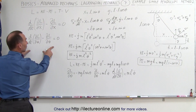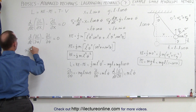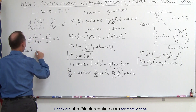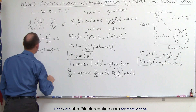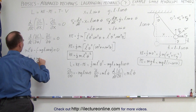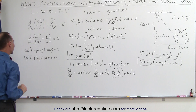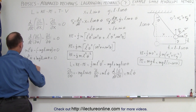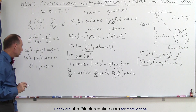Now we plug into our Euler-Lagrange equation. We take m l squared theta double dot minus the partial of L with respect to theta, which gives a minus times a minus, so plus mg l sine of theta equals zero. This simplifies to m l squared theta double dot plus mgl times sine of theta equals zero. Canceling m from both sides and dividing by one l, we get l theta double dot plus g times sine of theta equals zero.